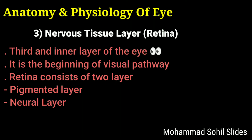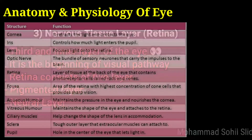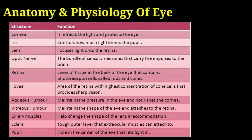Now, the functions of the eye. First, the cornea: its basic function is to refract light and protect the eye. Second, the iris: controls how much light enters the pupil. Third, the lens: focuses light onto the retina. Fourth, the optic nerve: the bundle of sensory neurons that carry impulses to the brain. Fifth, the retina: the layer of tissue at the back of the eye that contains photoreceptor cells called rods and cones.